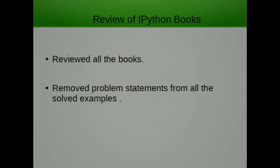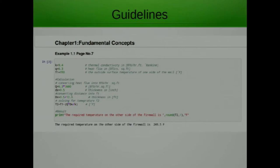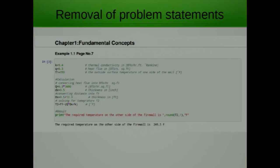First, the review of IPython books. We started by reviewing the IPython books to check whether they follow the specified guidelines — all headings in h1 format, subheadings in h2 or h3, all formulas checked including angle conversions to degrees when using sine and cosine functions, every chapter as an individual IPython file, and all plots named with appropriate titles. We also removed all problem statements from all chapters to prevent copyright infringement. The new IPython notebooks now contain only the chapter name, example number, page number, and the solved examples. A Python script was written by us specifically for removing these problem statements.